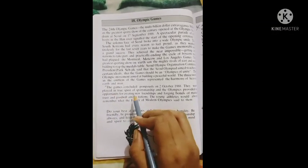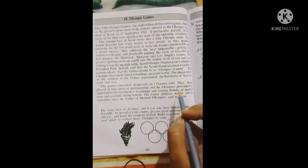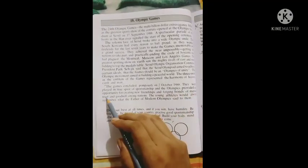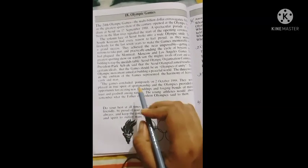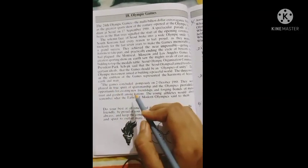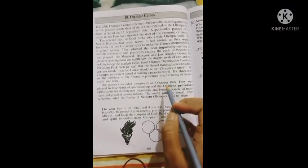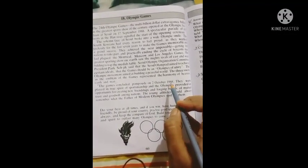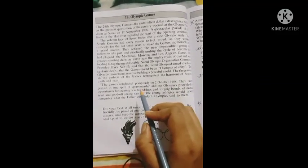So this Olympic game has ended on 2nd October in 1988. This game helps everyone to build new friendship among the nations.